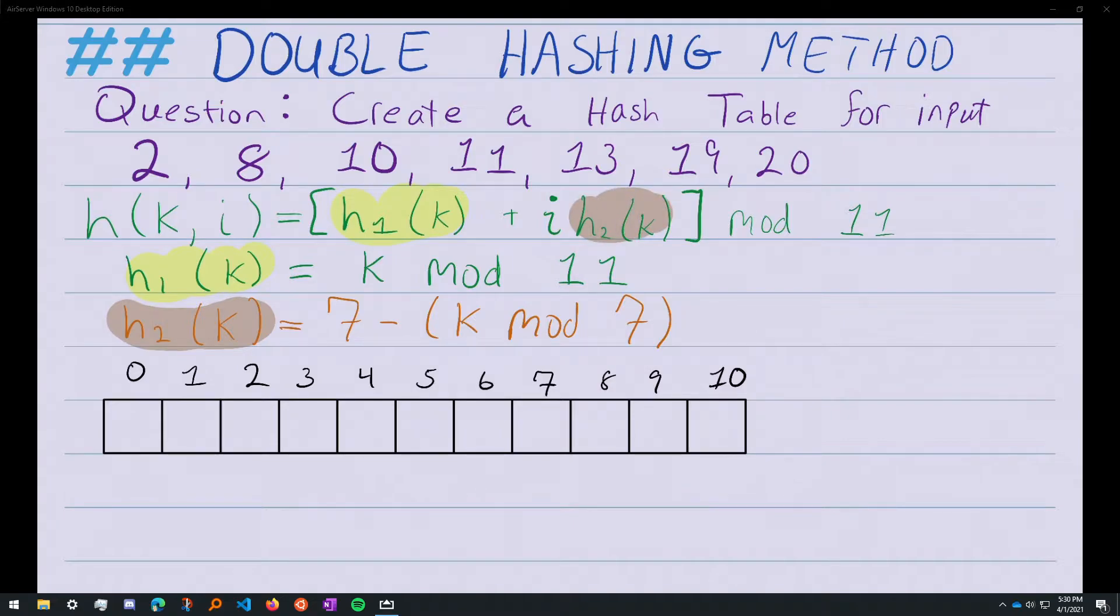Now the h2 function will be provided to us. It's not something that we derive. And i is simply a counter keeping track of the number of times our given input has attempted to go into the array but collided. So i begins at 0 for any given input.